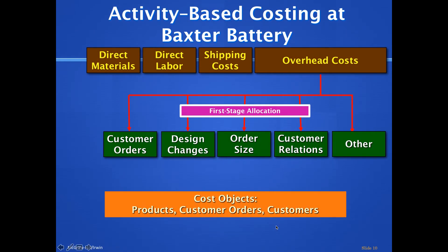Direct material, direct labor, and shipping costs are specific and don't need to be lumped into the overhead bucket — it's always a gray area trying to put everything into overhead. These direct costs are easy to trace to specific orders and customers, so they're automatically apportioned to those specific people. It's the overhead costs that require the ABC allocation process.